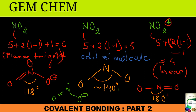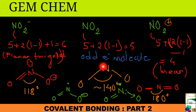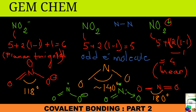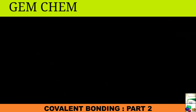NO₂ can be drawn with an odd electron on nitrogen, a double bond oxygen, and O⁻. Since the electron count is between NO₂⁻ and NO₂⁺, the bond angle is between 120° and 180°. In liquid state, NO₂ molecules come close to each other, odd electrons over nitrogen pair up, leading to dimerization. The dimer structure shows a nitrogen-nitrogen bond, with two double bond oxygens and two coordinate covalent bond oxygens.